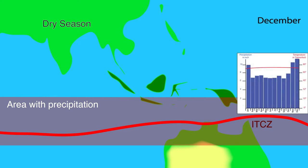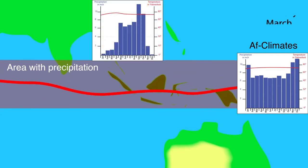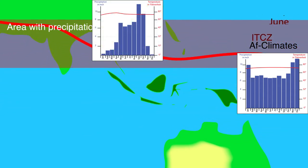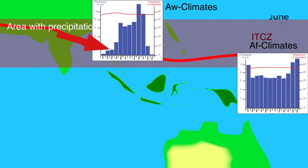The equator is almost always influenced by the ITCZ, causing it to rain, so there is no dry season at the equator. According to the Köppen climate system, these are AF climates — warm and moist. North of the equator it rains in July and is dry in December, making it an AW climate: warm and dry in the winter months.